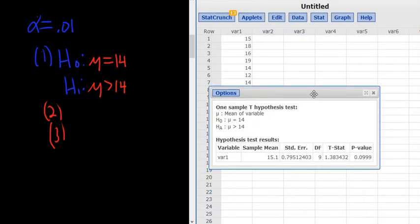The test statistic is our T. So T here is 1.38. And step three is the p-value. The p-value in this problem is 0.0999.